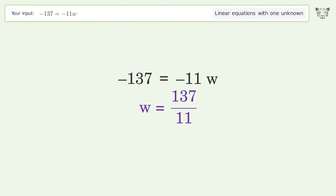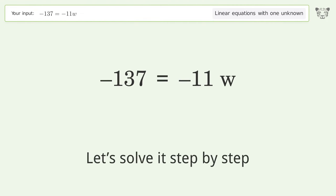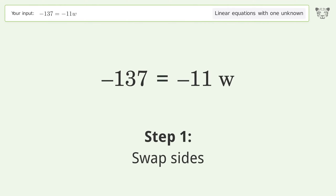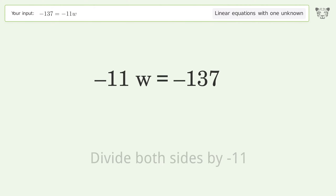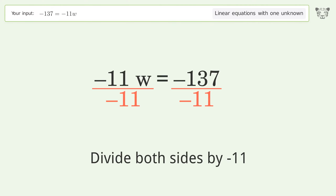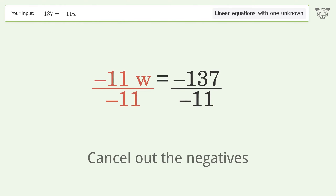Let's solve it step by step. Swap sides, isolate the w, divide both sides by negative 11, and cancel out the negatives. Simplify the fraction.